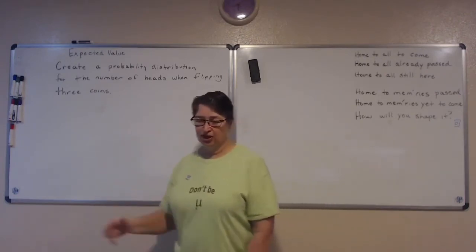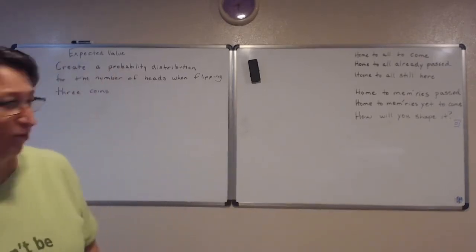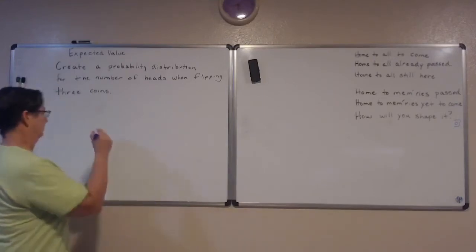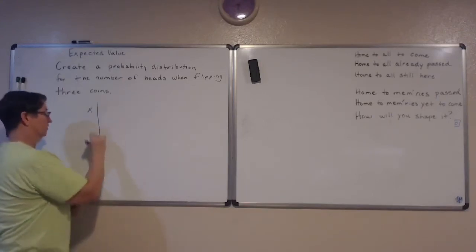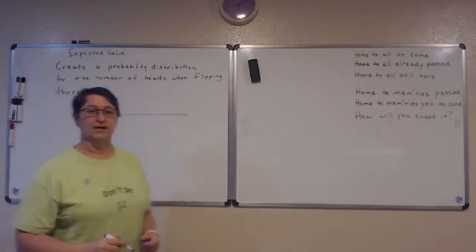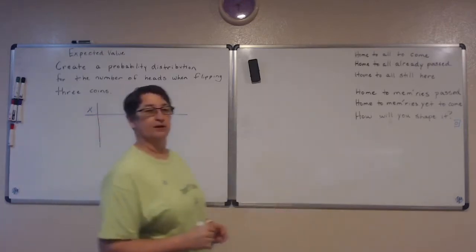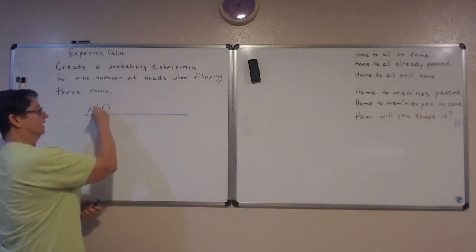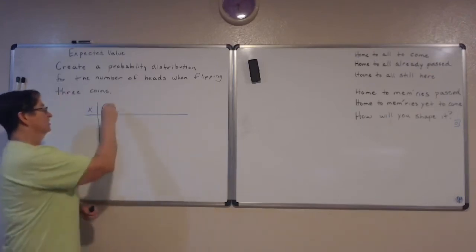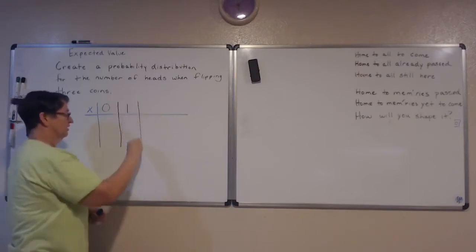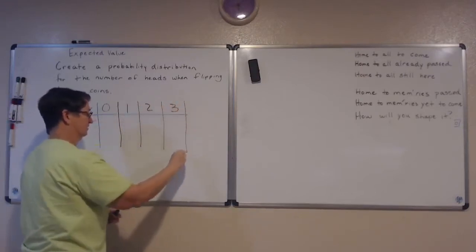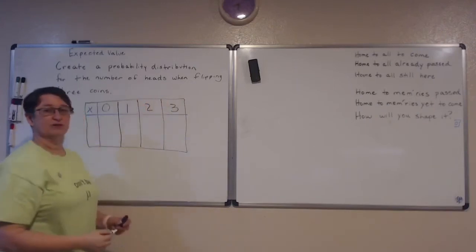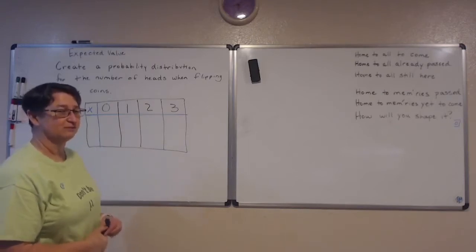My random variable here is the number of heads — so how many heads could I get? The possible outcomes are zero, one, two, or three heads. I can't get more than three because I'm only flipping the coin three times, and I can't get less than zero because none is the smallest I can get.